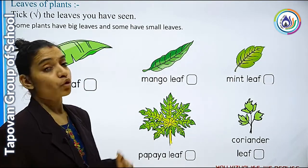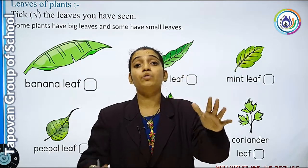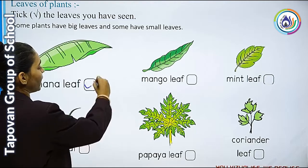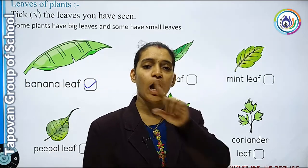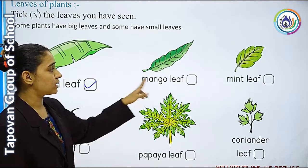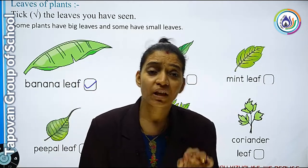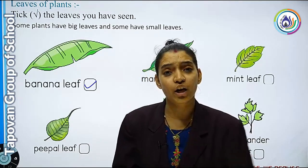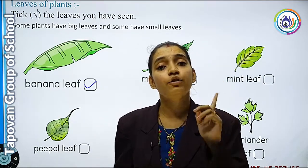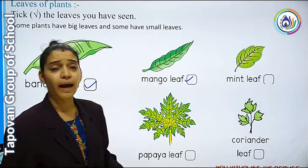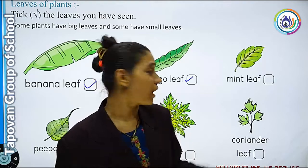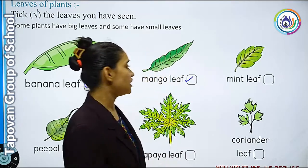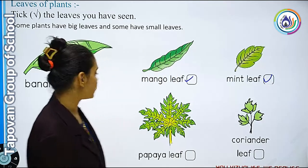First is banana leaves — आप लोगों ने banana leaves देखे हैं, banana का plant छोटा होता है लेकिन उसके leaves size में बहुत बड़े होते हैं. जिसने banana leaves देखे हैं वो tick करेगा, जिसने नहीं देखा वो blank छोड़ देगा. Next, mango leaves यानि आम के पेड़ के leaves — ये तो सारे बच्चों ने देखे होंगे, हमारे घर में function या पूजा होती है तो mango के tree के leaves लाए जाते हैं. Next है mint leaves — ये तो छोटे होते हैं, मम्मी से पूछना mint का leaf दिखाने को. जिसने mint leaves देखे हैं वो tick करेगा.